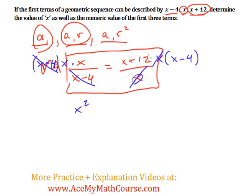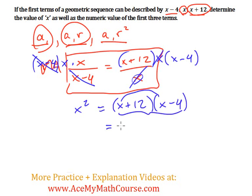Multiply this by x minus 4 as well. So we end up with x squared is equal to x plus 12 times x minus 4. Then I can FOIL this and expand it. x times x is x squared. x times negative 4 is negative 4x. 12 times x is 12x, and 12 times negative 4 is negative 48.